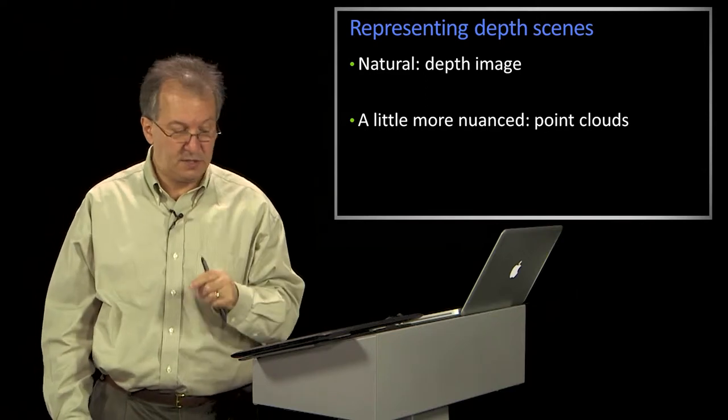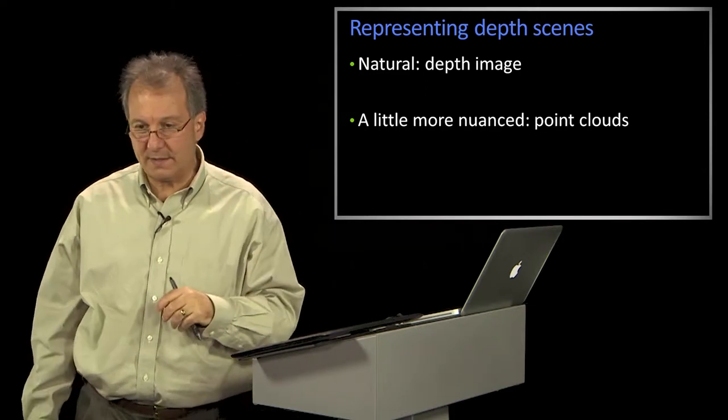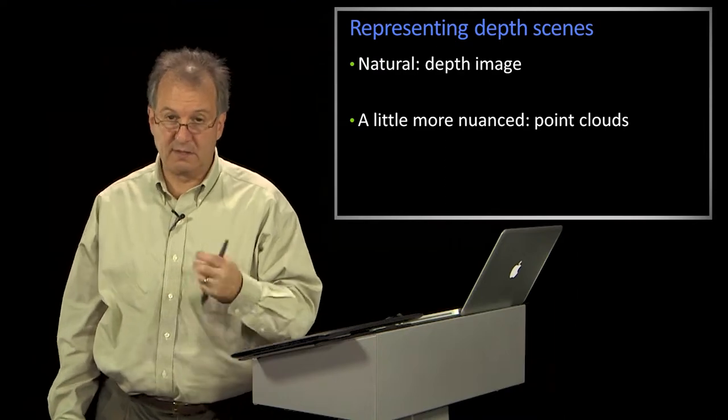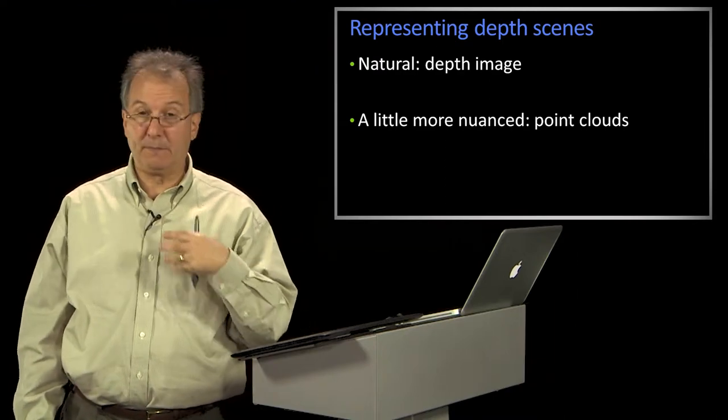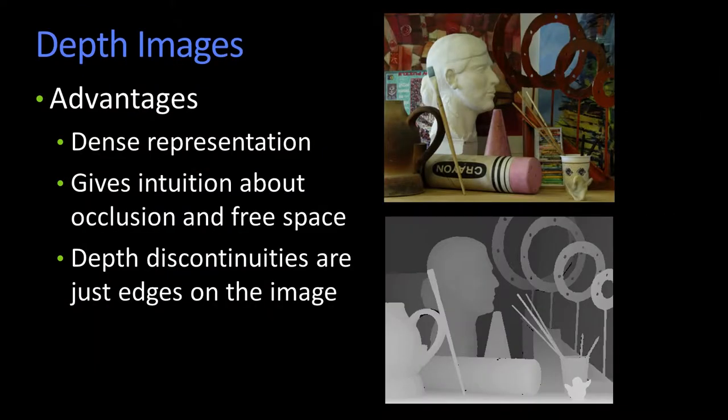One is a depth image. And then there's a slightly more, I use the word nuanced, a little more recent notion of representing depth, namely point clouds. So depth images, as shown here, this was another one of those stereo figures from the Middlebury stereo data set.